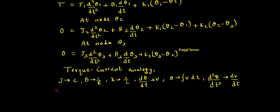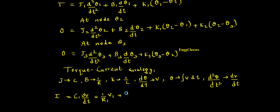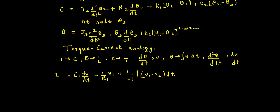Applying torque-current analogy to the first equation: T (torque) is replaced by current i. So i = c1 · (dv1/dt) + (1/r1) · v1 + (1/l1) · ∫(v1 − v2) dt.